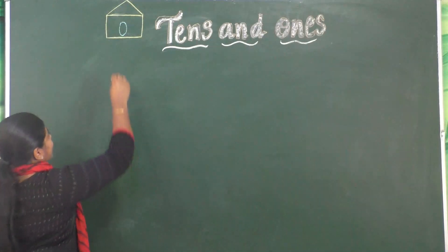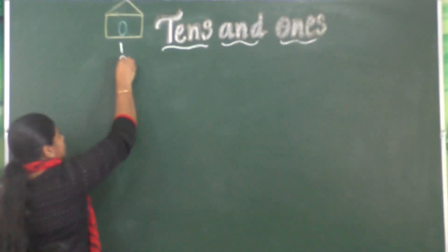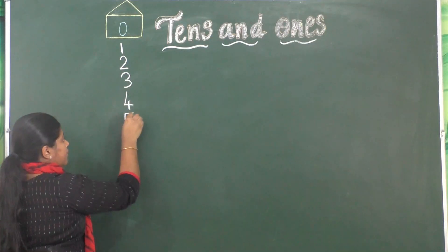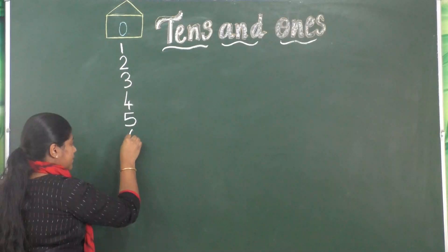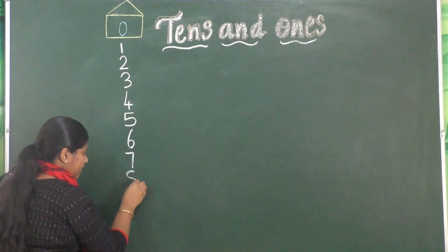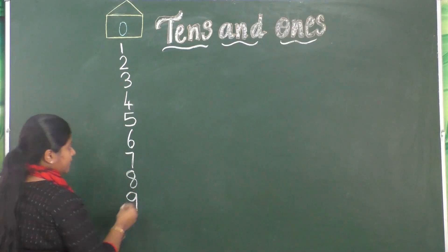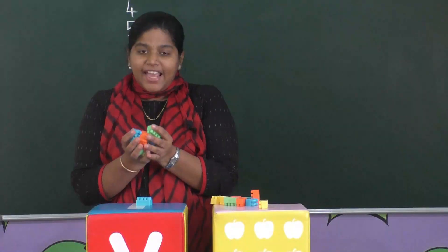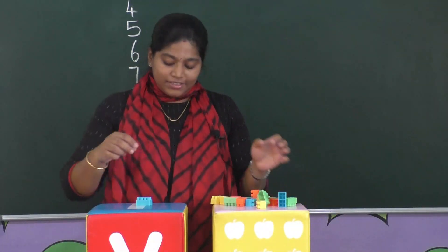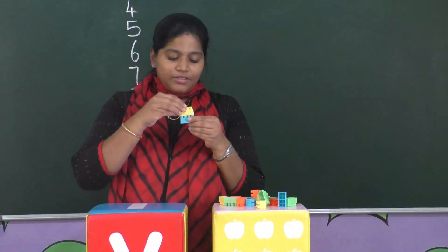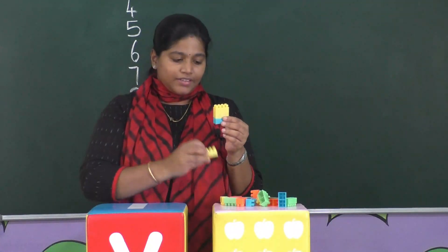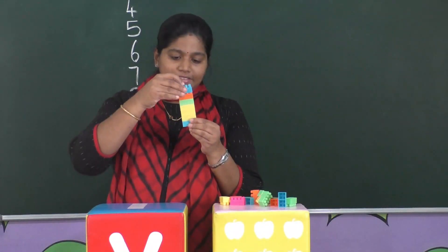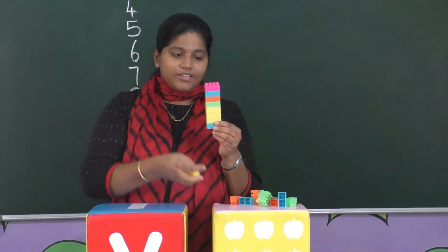So let's write: 1, 2, 3, 4, 5, 6, 7, 8, 9. Before writing 10, here I have a few blocks. So let's stack these blocks — let's stack 9 blocks: 1, 2, 3, 4, 5, 6, 7, 8, 9.